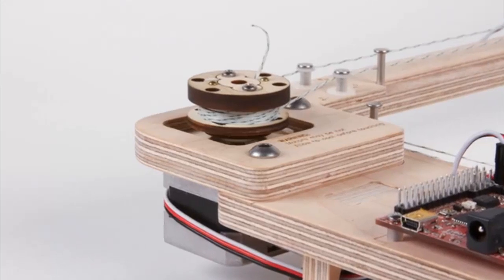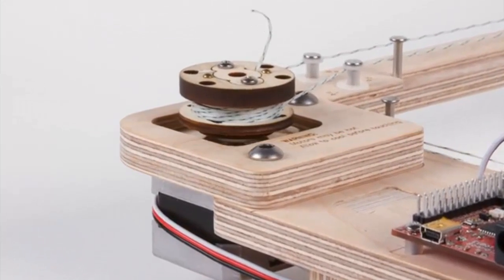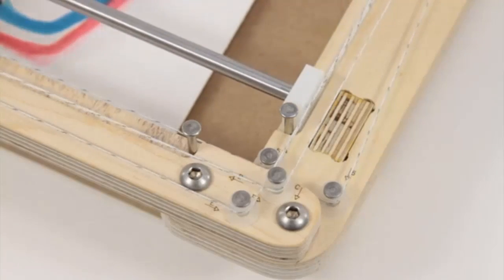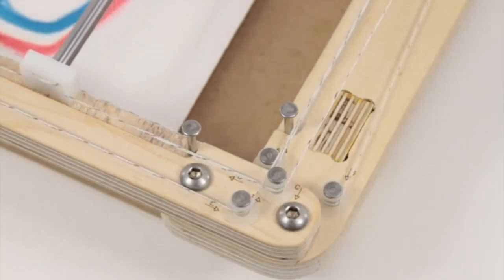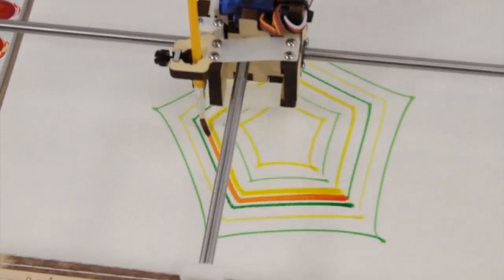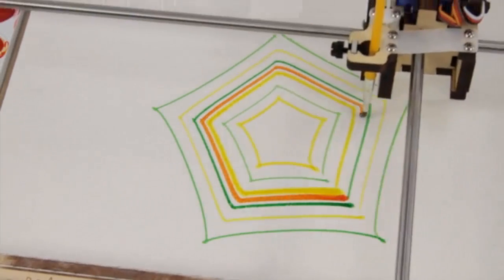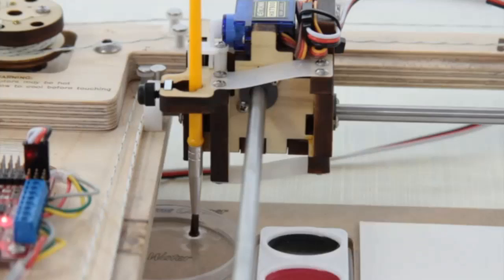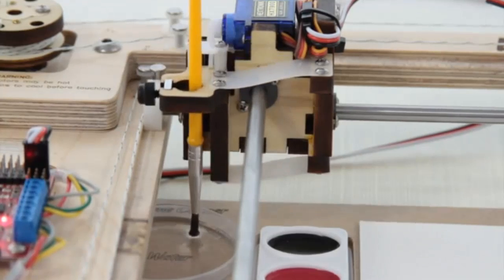To move the brush, there are two motors built into the frame of the robot. Each motor drives a little winch that moves the length of cord attached to a rod that controls either the X or Y position of the brush. This is the same mechanism that an Etch-A-Sketch uses, but instead of a stylus, we have a carriage that moves the brush up and down.